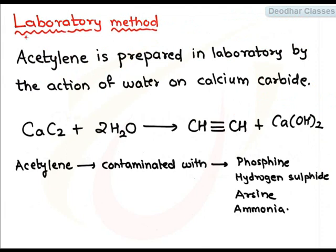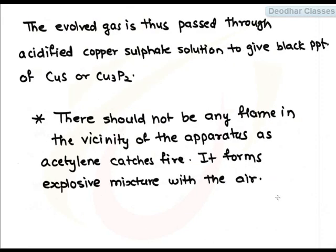In lab, acetylene can be prepared by treating calcium carbide with 2 moles of water. When calcium carbide is treated with water, it forms acetylene along with calcium hydroxide. But acetylene formed during this process is contaminated with phosphine, hydrogen sulfide, arsine, or ammonia. These contaminations are removed by passing the gas evolved from the reaction vessel through acidified copper sulfate solution. One more thing that you have to remember is that acetylene catches fire very easily. Make sure that your apparatus is placed in a region where there is no flame in the vicinity.